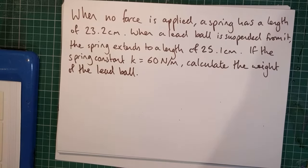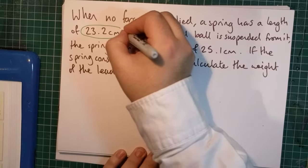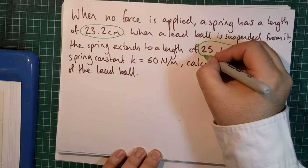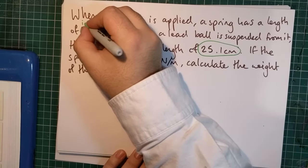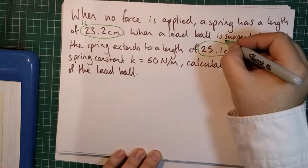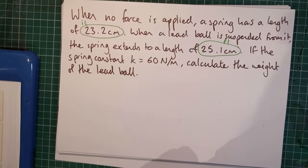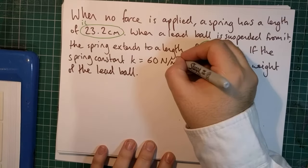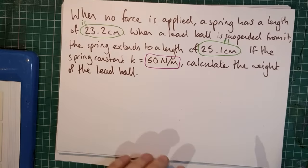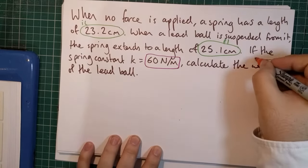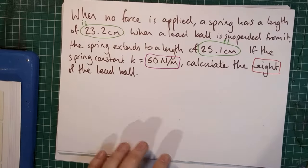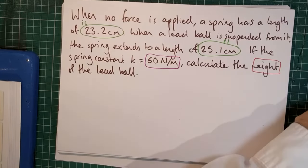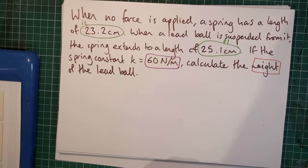Now, we've kind of been given, well, we haven't directly been told the extension, but we have been told two lengths. The initial length, so this is our initial length. And over here, we've been given our final length. We've also been given a spring constant over here, 60 newtons per meter. And we've been asked to give the weight. And the weight is the force in this equation. It's the force applied to this spring.